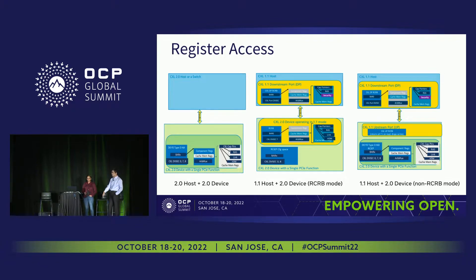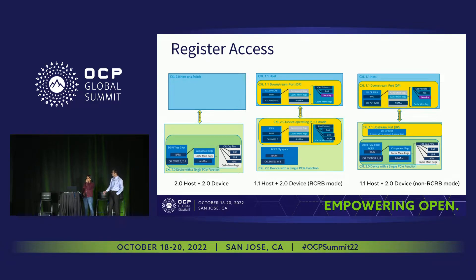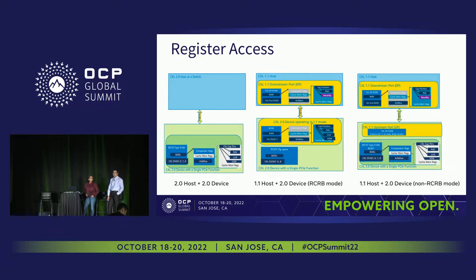Fast forward a year to a year and a half, we will have the next generation of processors coming out that support 2.0 hosts, combined with 2.0 devices. These present some differences: with a 2.0 host and 2.0 device, the device is a full endpoint device. But on the right-hand side, the device is actually a root complex integrated endpoint, and the RCRBs are not visible by default to the operating system. All those challenges need to be answered.